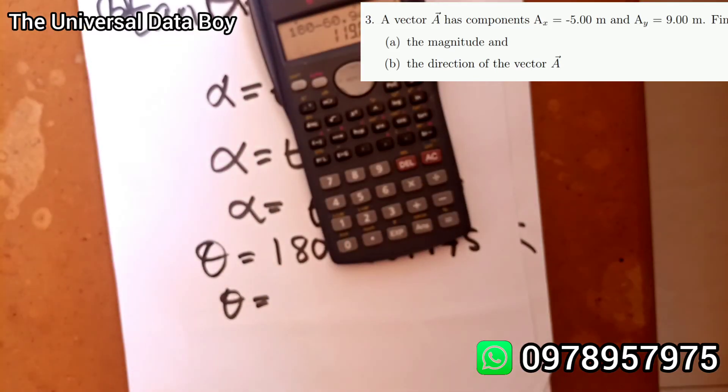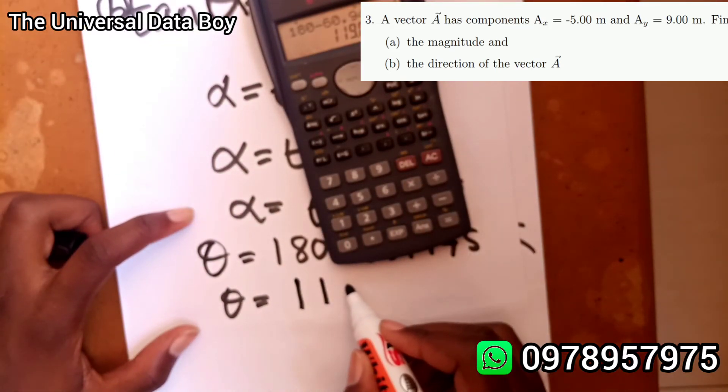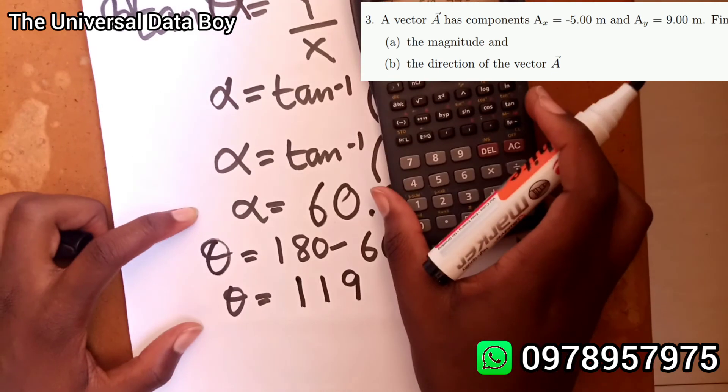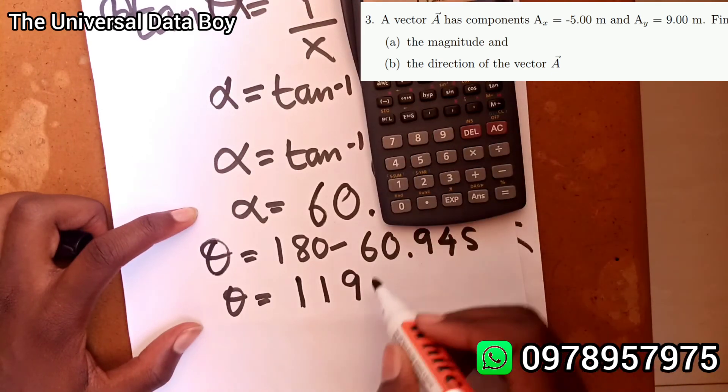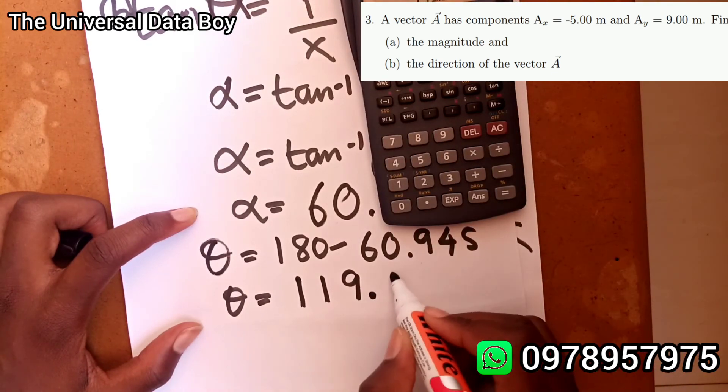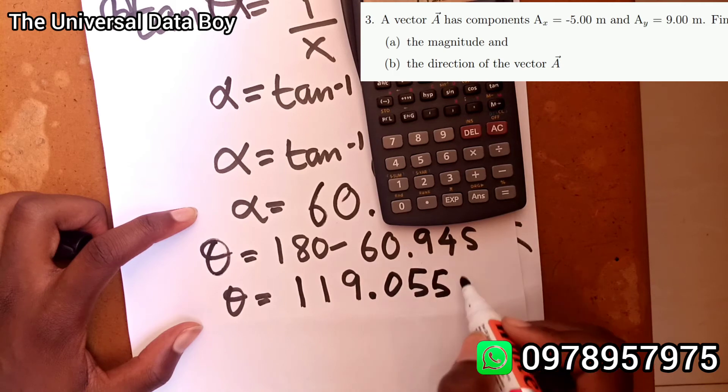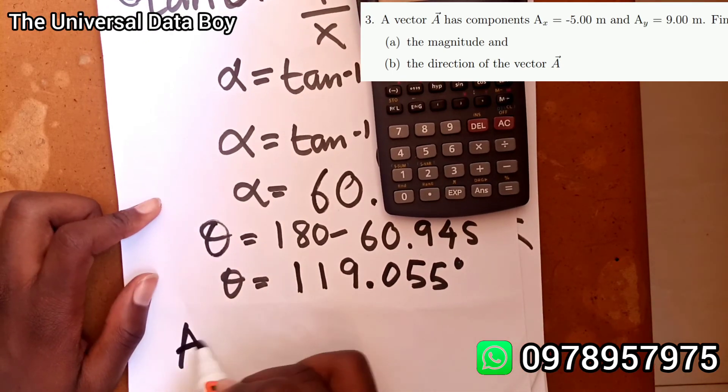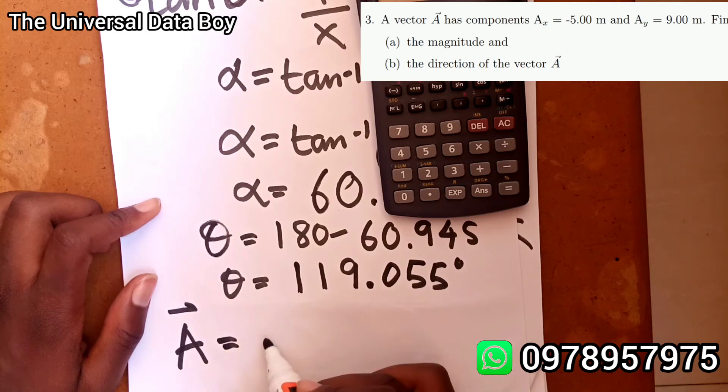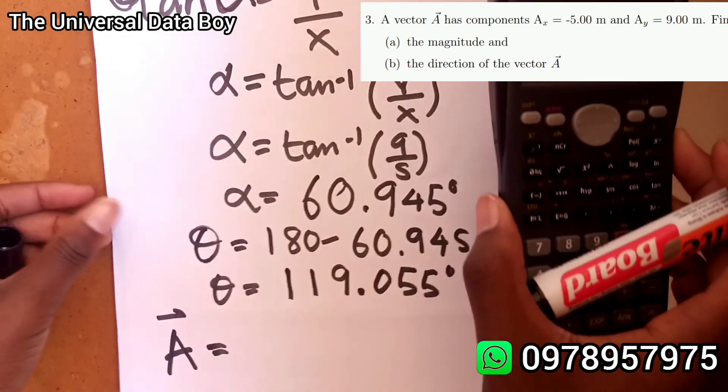119.055 degrees. So now we have vector A is going to be equal to its magnitude 10.296.